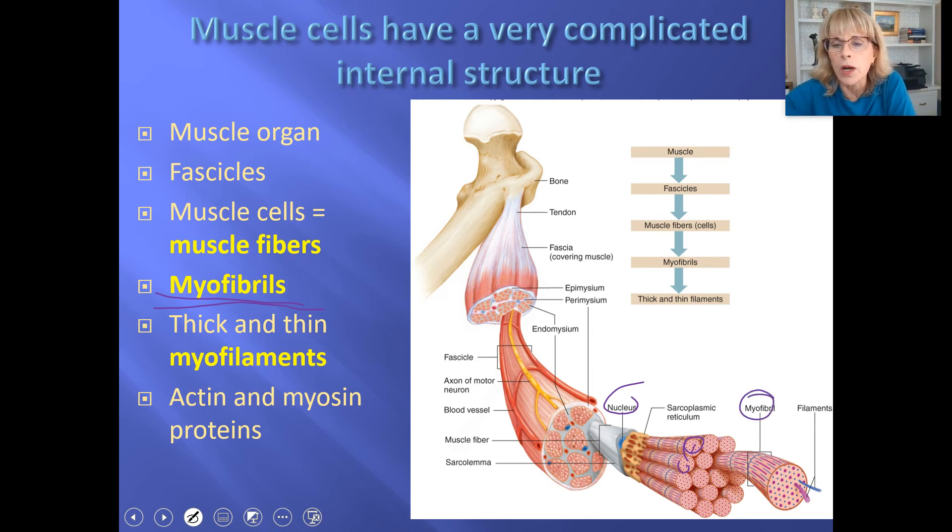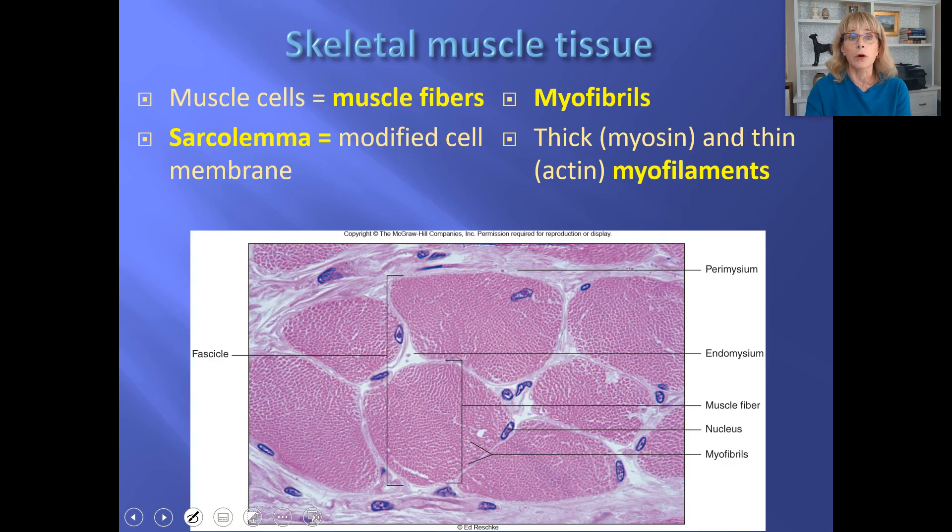So muscle and then fascicles and then muscle cells and then inside of them are these myofibrils. There are many myofibrils inside the muscle fiber. And those myofibrils in turn are made out of proteins that have got really huge quaternary structure. Remember that some proteins get stuck together with others of their kind to make really big things like hair. That is something with quaternary structure. And those are the myofilaments. Ultimately, the proteins that are most important in these myofilaments are actin and myosin. And we will talk more about them.